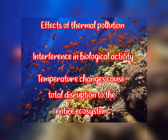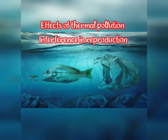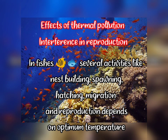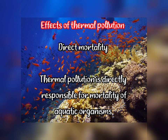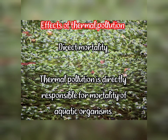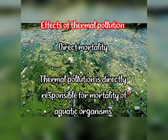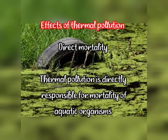Next is interference in reproduction. In fish, several activities like nest building, hatching, migration, and reproduction depend on water temperature. Next is direct mortality: thermo pollution is directly responsible for the mortality of aquatic organisms. Increased water temperature leads to exhaustion of microorganisms and shortens the lifespan of fish. Fish die due to failure of the respiratory system and nervous system.